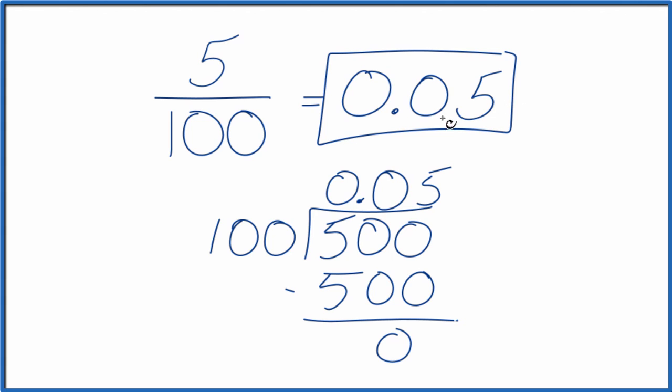You can check your work. 0.05 times 100, that'll give you 5.